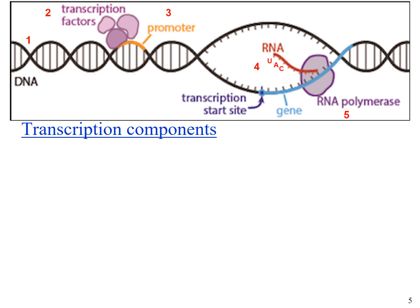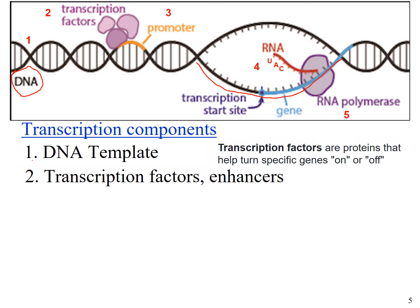We are going to look at the components necessary for the transcription process. First, you need a DNA template — a double-stranded DNA — where only one strand is used as a template to make messenger RNA. Next, we need transcription factors and enhancers. Transcription factors are proteins that help to turn on or turn off specific genes for gene expression, regulating the gene expression process. Enhancers are additional regions that help to increase or enhance transcription — molecules that either increase or decrease the rate of gene expression.